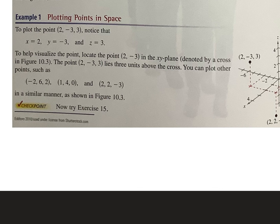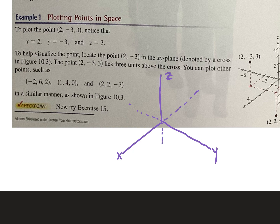So I'm going to draw my x, y, z plane. This is x, this would be the negative part of x. I have y here — that'll be negative and positive. And then z comes right out of the top of it, and that'll be the negative part. I'm going to plot the point (2, negative 3, 3). The first number is x, second is y, third is z.